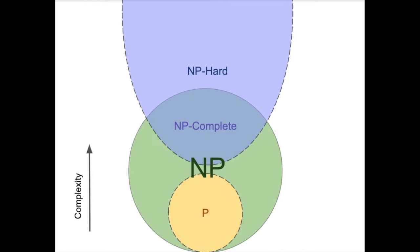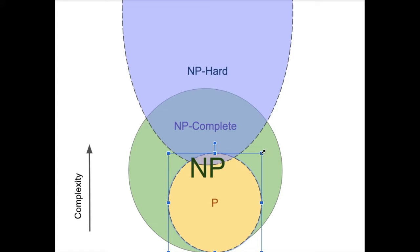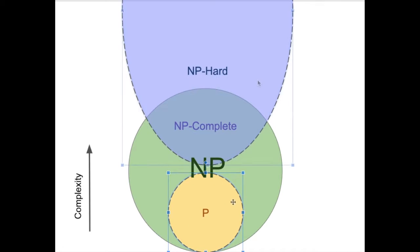Here we have a visual to show the relationship between all of these classes of problems. As you can see, we have NP, which has P inside of it. We don't know where this boundary is — we don't know if P equals NP — so we have a dotted line for it. NP-hard encompasses the hardest problems in NP, which is NP-complete, the overlap between NP-hard and NP. You also have problems that are harder, like exponential time and all the problems that are even harder than that.